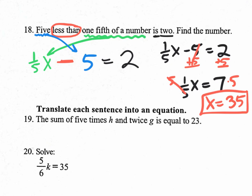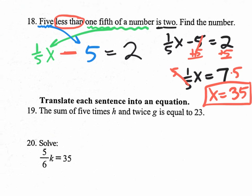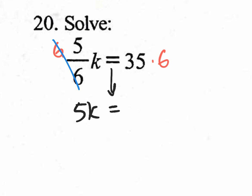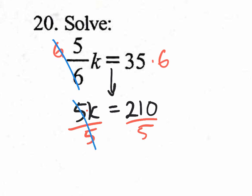Last question, number 20. How do I get rid of that fraction? Multiply by 6 — I put the 6 up on top because 6 divided by 6 cancels out. What I have left is 5K. Equal sign comes down, and 35 times 6 is 210. So 5K equals 210. To get rid of the multiplication of 5, divide by 5. With the calculator, 210 divided by 5 is 42. So K equals 42.